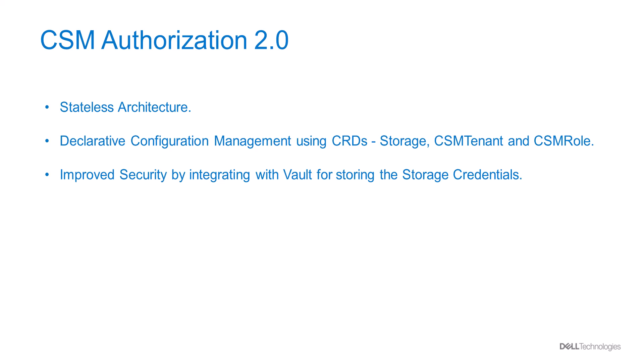CSM Authorization 2.0 is redesigned with a stateless architecture, meaning the CSM Authorization module doesn't need any persistent storage to keep state — it will rely on the storage array to keep the state. Also, CSM Authorization module 2.0 introduces declarative configuration management using CRDs. For that purpose, it introduces three different CRDs: Storage, CSMTenant, and CSMRole.